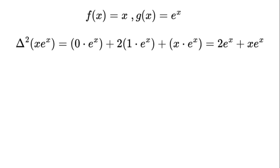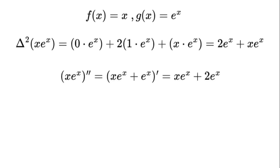Verify: the second derivative of x times e to the power of x equals the derivative of (x times e to the power of x plus e to the power of x), which equals x times e to the power of x plus 2 times e to the power of x. It's spot on. The binomial trick works for higher derivatives too.